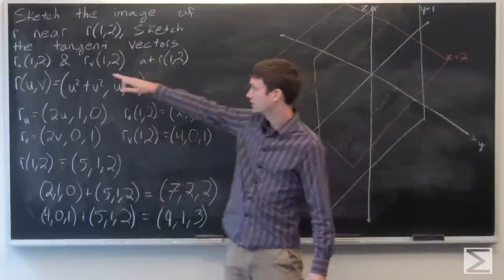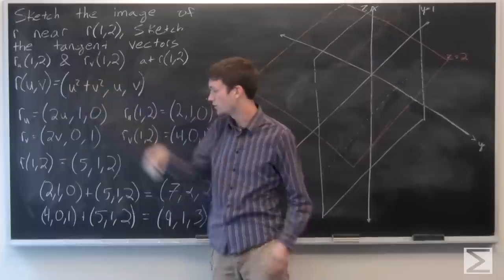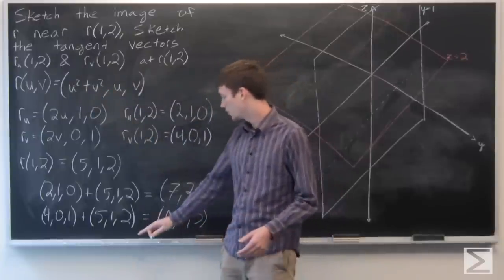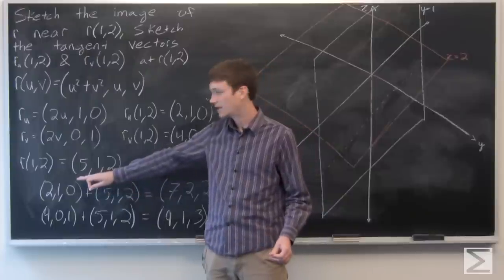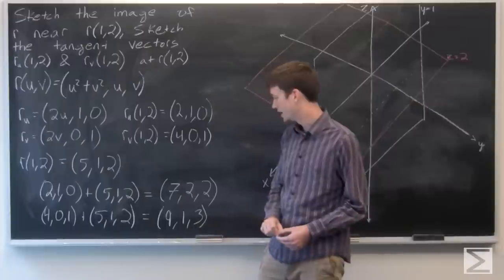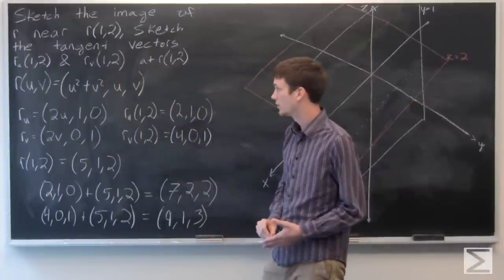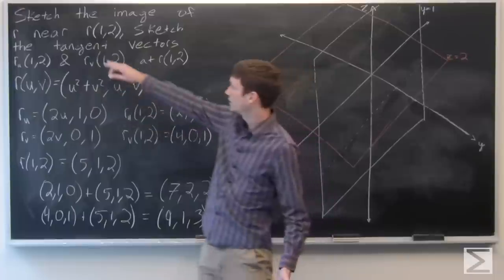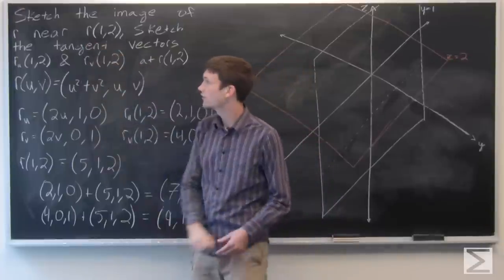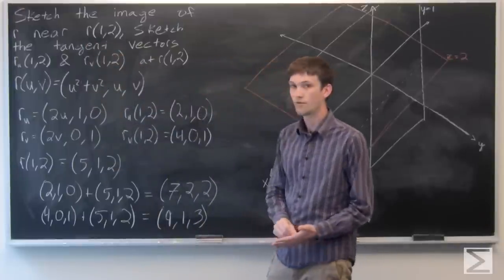So we're going to draw vectors from the point (5,1,2) to (7,2,2) as our tangent vector for r sub u, and we'll draw a vector from (5,1,2) to (9,1,3) as our tangent vector for r sub v at (1,2). Now we want to sketch the image of r near r(1,2).